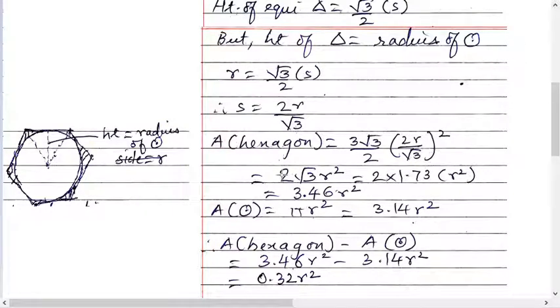So what do you get? Check what gets cancelled and you get 2 root 3 times r square. That is 2 times 1.73 times r square. Now 3.46 times r square. So area of hexagon is 3.46 times r square.